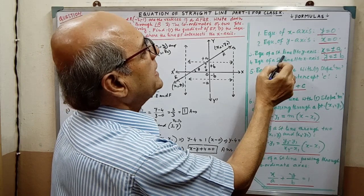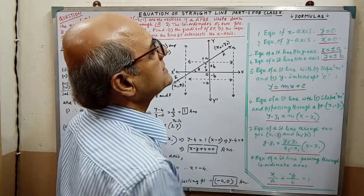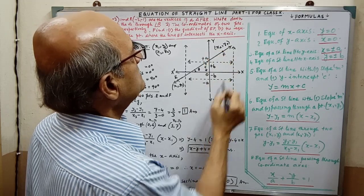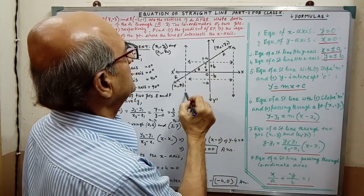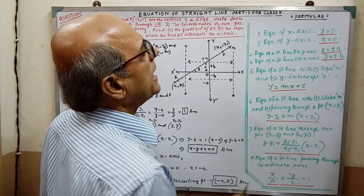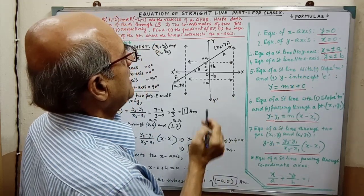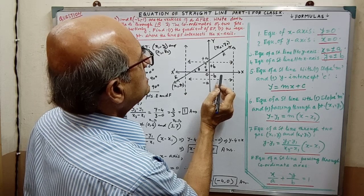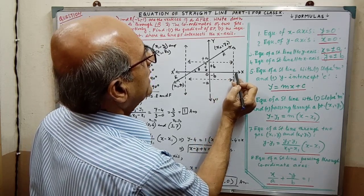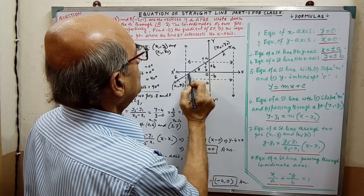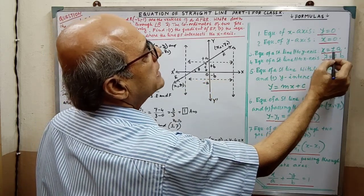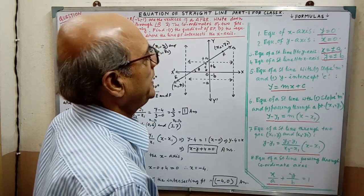The equation of a straight line parallel to the y-axis is x equal to plus or minus a. On the right side of the y-axis it is plus, and on the left side it is minus.